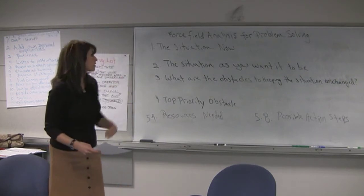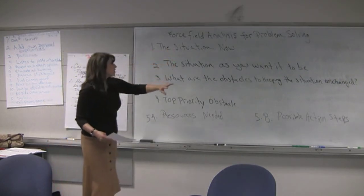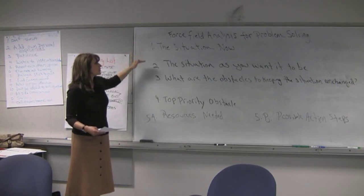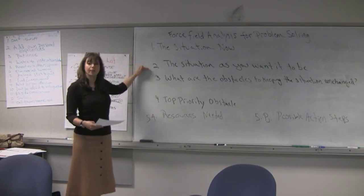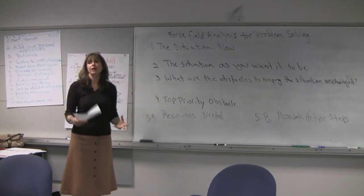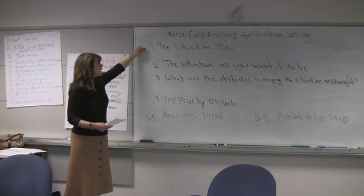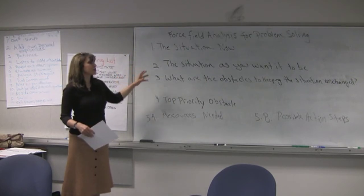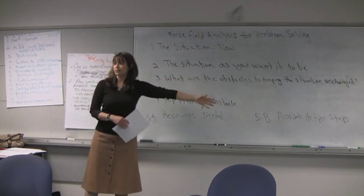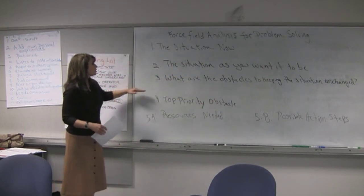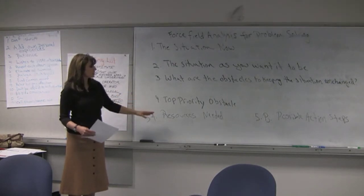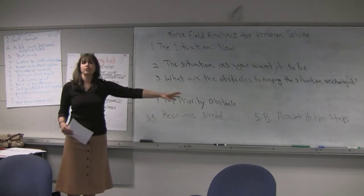The way this works is force field analysis says that you have to come up with a situation that you're in right now that is the problem, something that you don't like that's happening. Then you want to figure out what the situation is that you want it to become. That's an easy way of saying what's your goal. Then you look at what the obstacles are keeping the situation unchanged. Then you figure out what your top priority obstacle is, and finally you figure out the resources needed for it and develop some possible action steps.